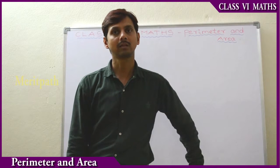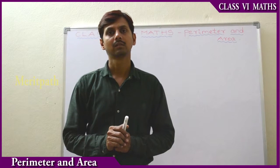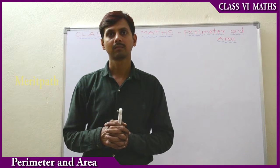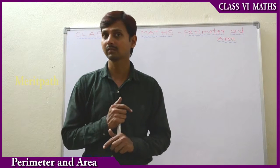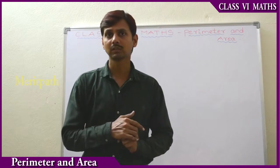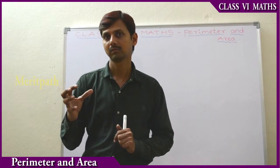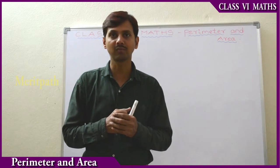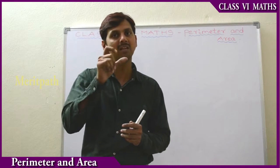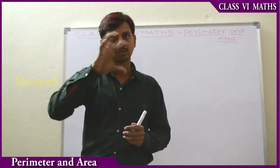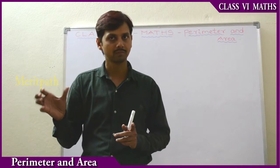To show the perimeter, let's take a triangle. A triangle is nothing but a simple closed figure bounded by three line segments — it has three sides. To find the perimeter of triangle ABC, we add all three sides: AB plus BC plus AC. The sum of all the sides is called the perimeter of the figure.